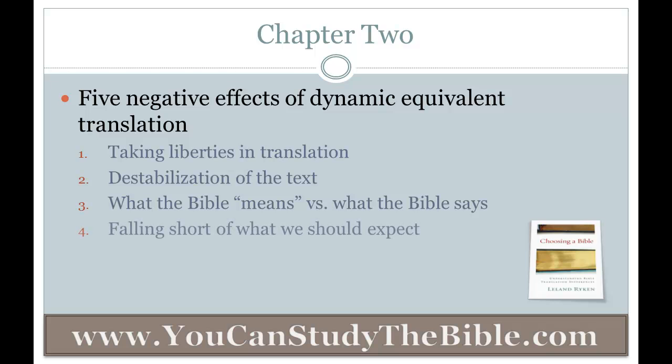The fourth argument is falling short of what we should expect. The author states: 'My fourth objection against dynamic equivalent translations is that these translations fall short of what the Bible-reading public should rightfully expect.' When we pick up any book — Bible translation or novel — we assume we have before us what the author actually wrote. People expect the Word of God translated into their language, not someone's interpretation of what the Word of God says.